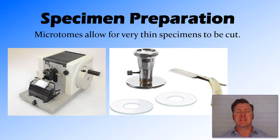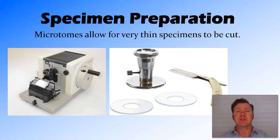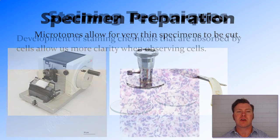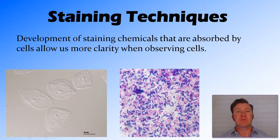One of the pieces of equipment we have now is called a microtome. In a microtome, you set your specimen in wax and then shave it — a bit like the slicer at the deli — getting a very thin section that can then be put onto your microscope slide. We've also developed some pretty clever staining techniques.